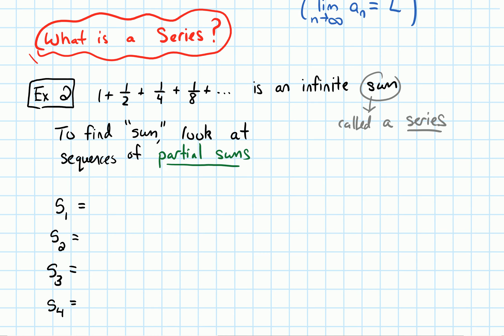A partial sum is: instead of adding up all of these infinite terms all at once, let's just do it bit by bit. So S1 is going to be the first partial sum — that means you just take the first number in this list, just the one, on its own. S2 would be the first two terms added up, so that would be one plus one-half, which simplifies to three-halves. S3 would be the first three terms added up: one plus one-half plus one-fourth, which simplifies to seven-fourths.